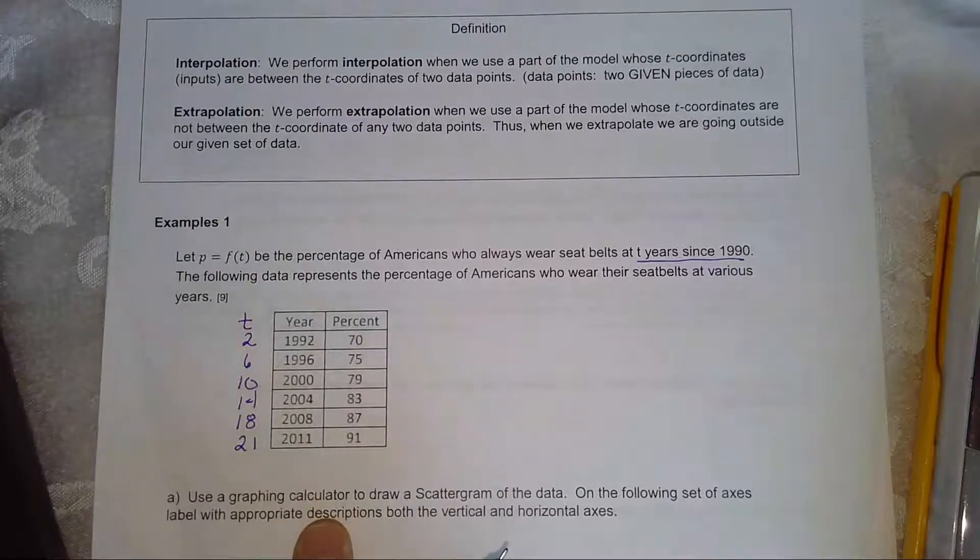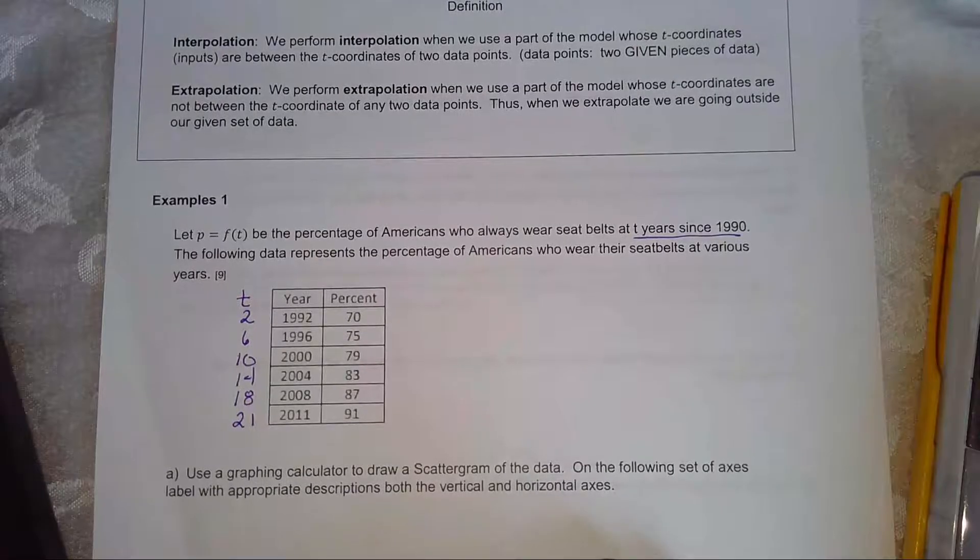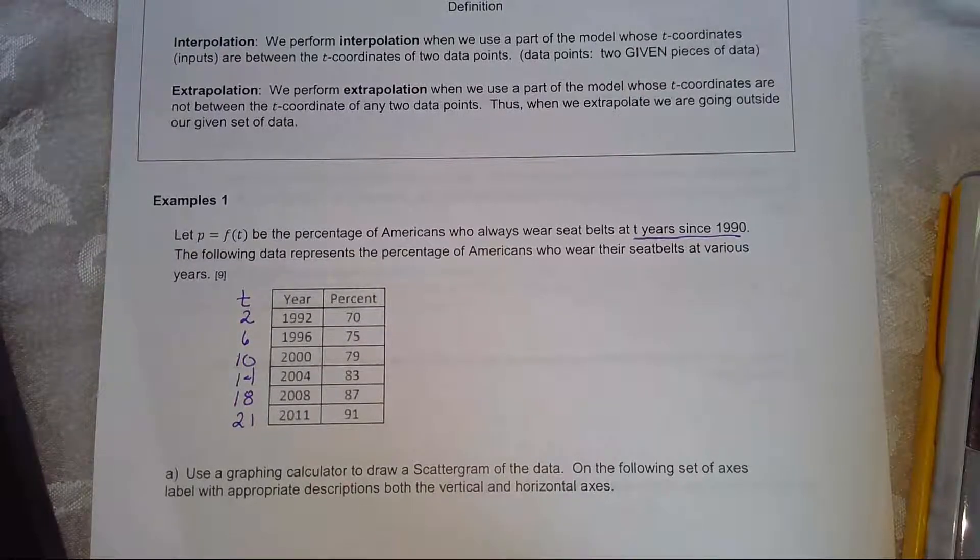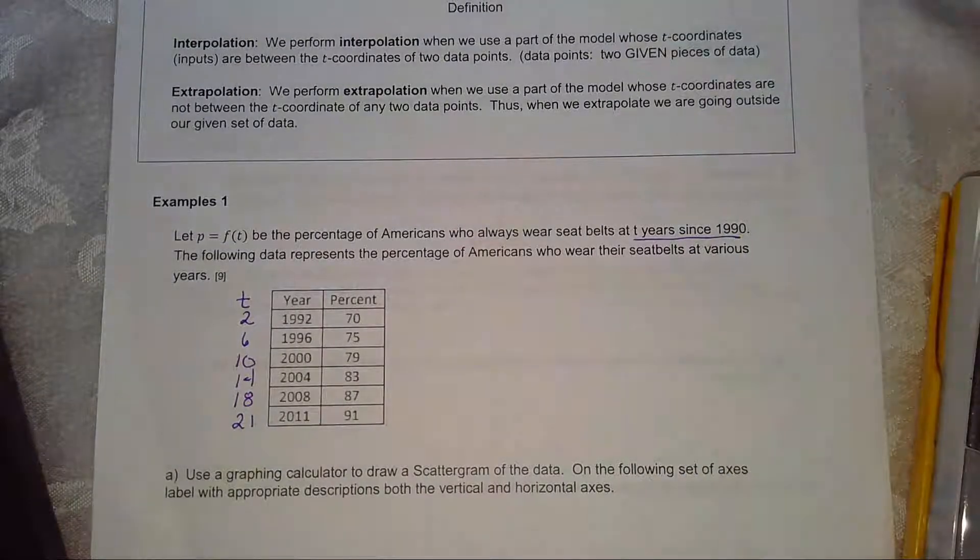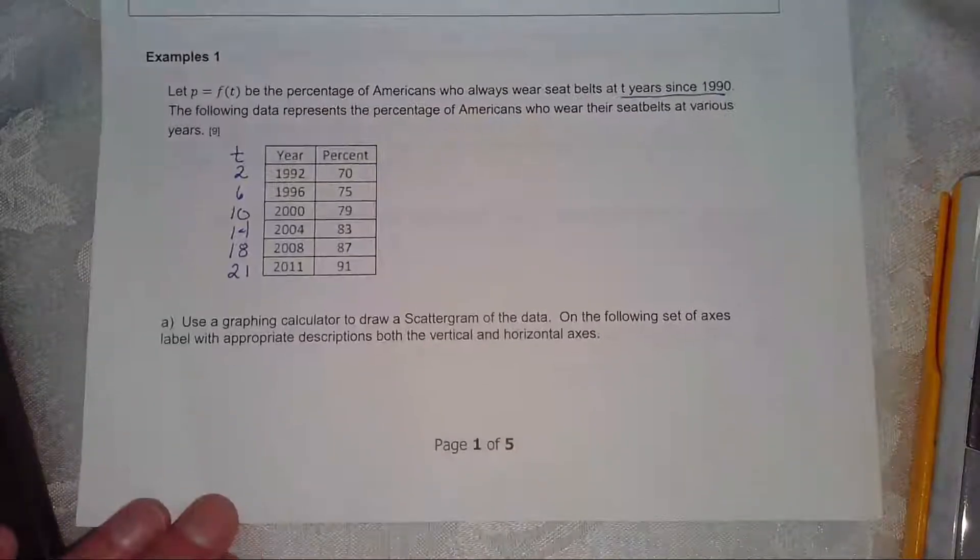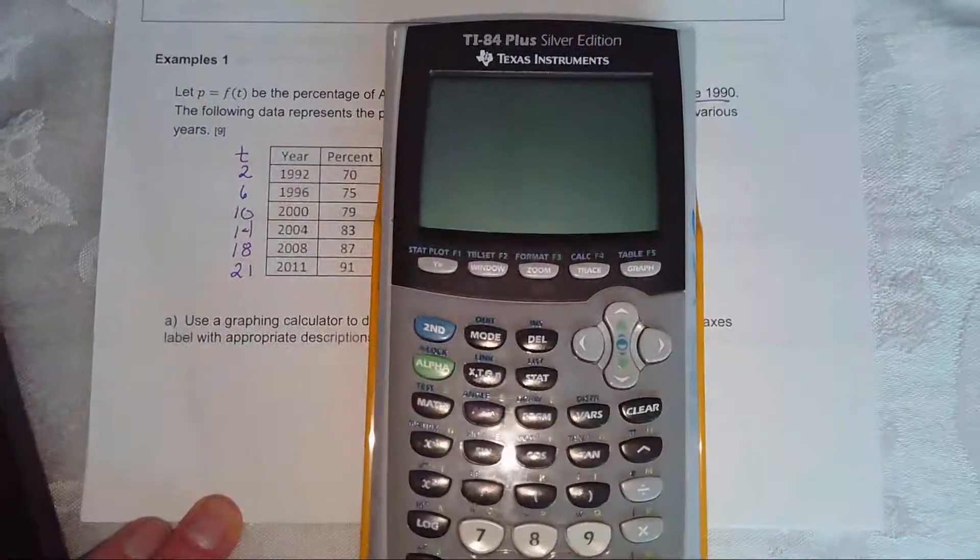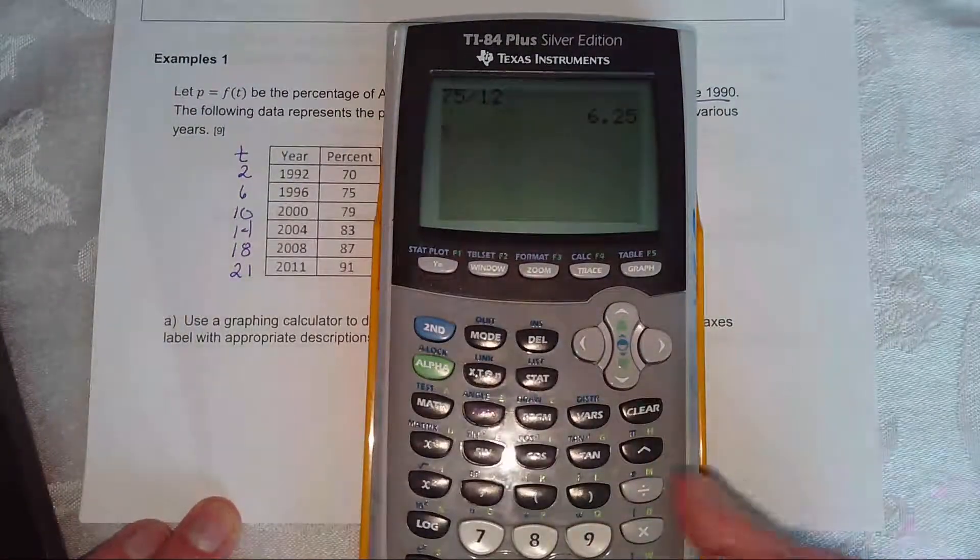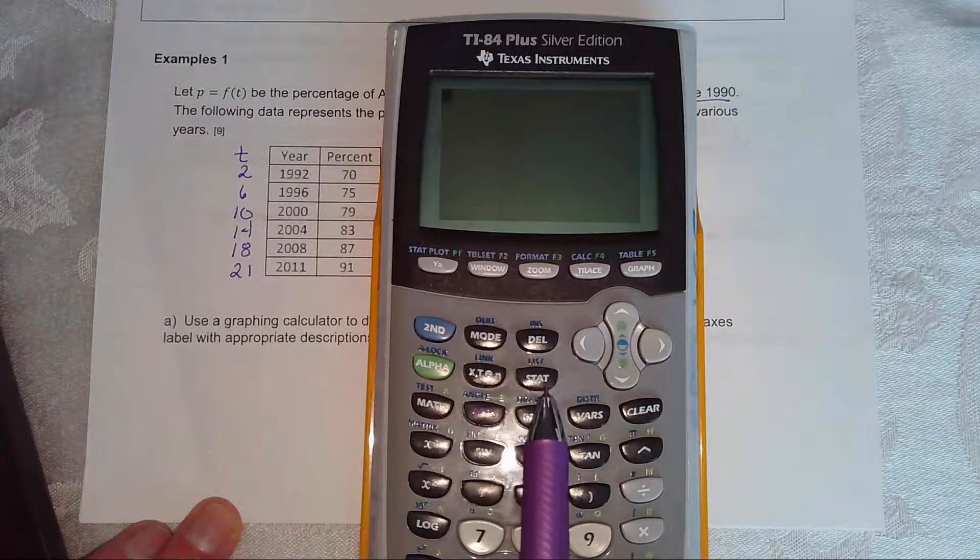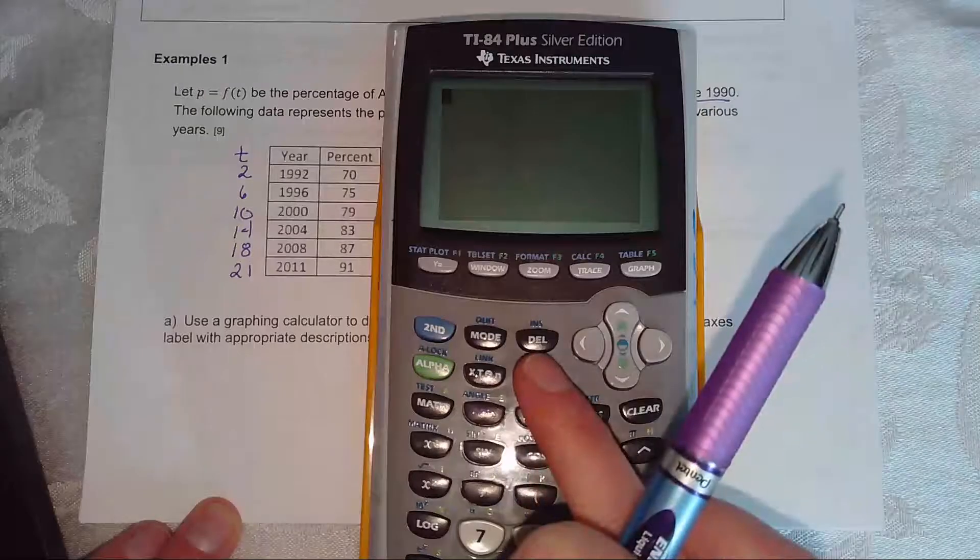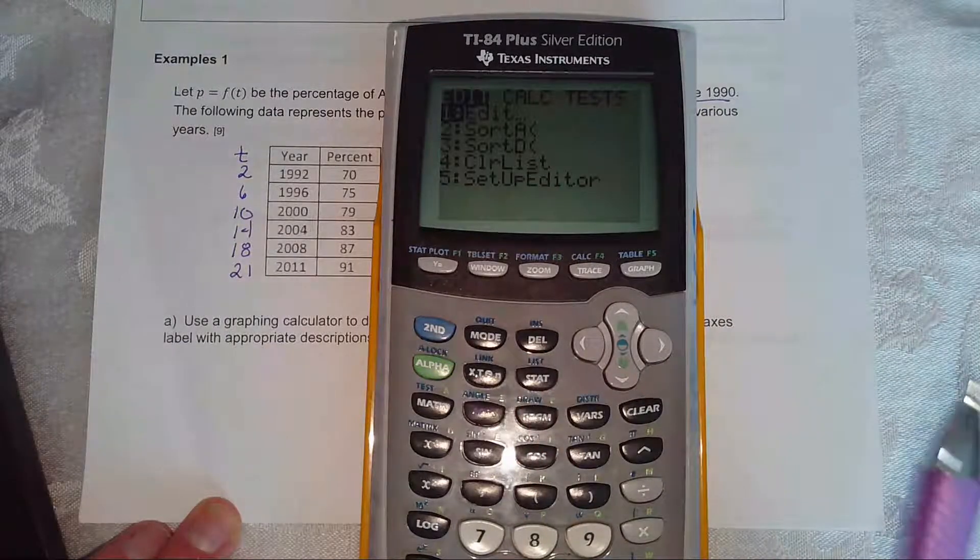So the problem asks you to use your calculator to make a scatter plot, and basically what a scatter plot is, is just to plot these points on your calculator. So let's turn on our calculator and the key to enter in data is the stat key. I'm just going to clear this out. So I need you to go in and hit stat and then enter.